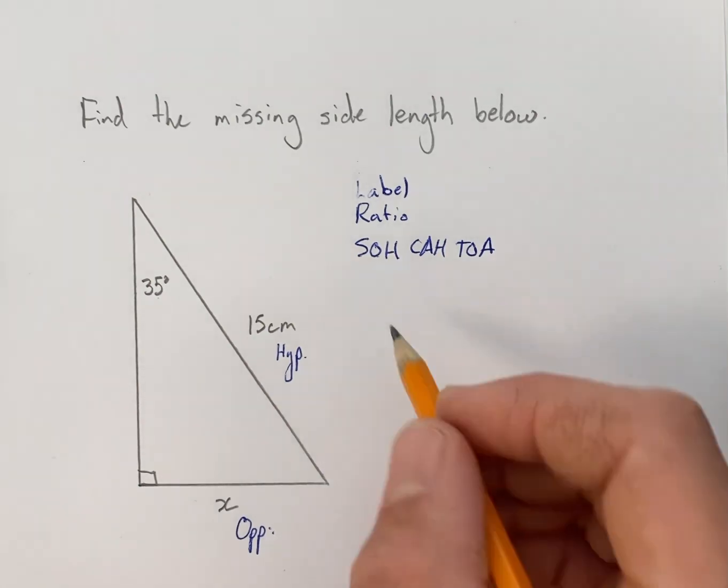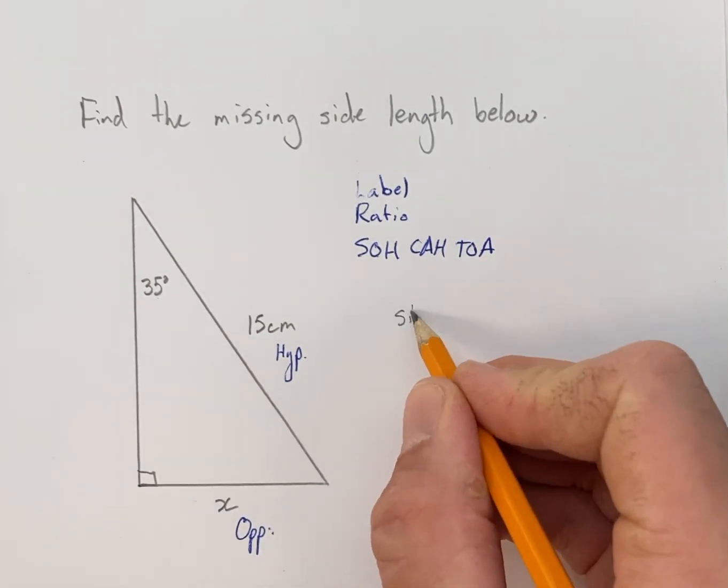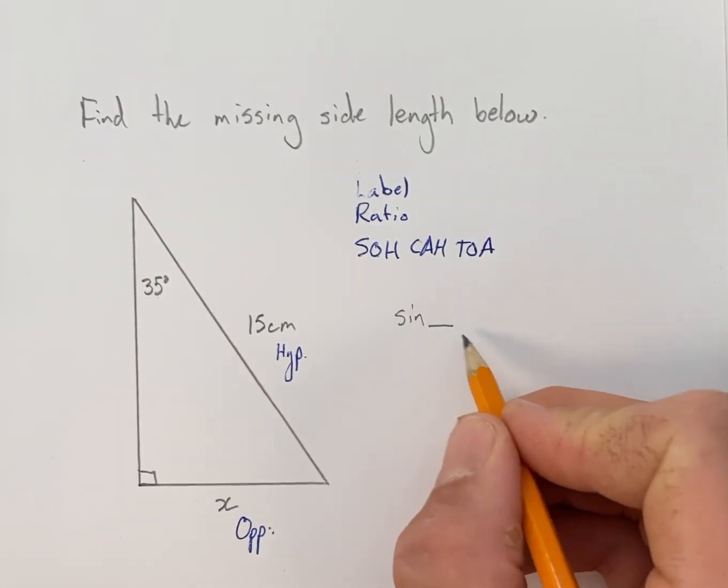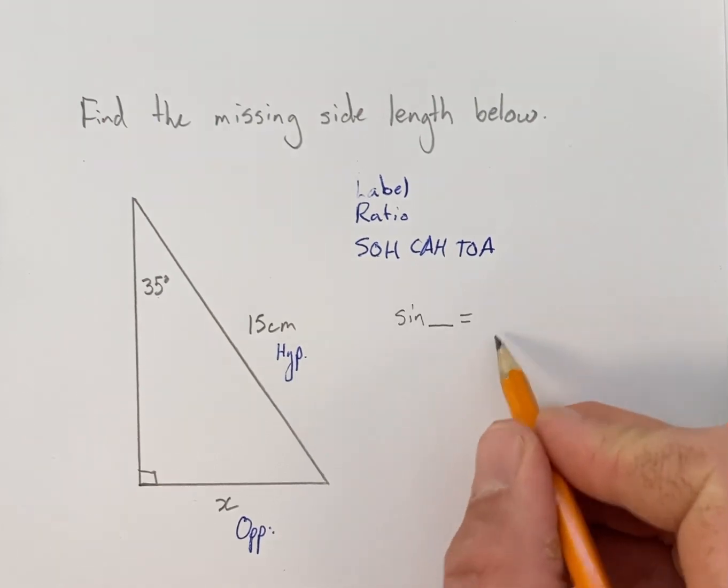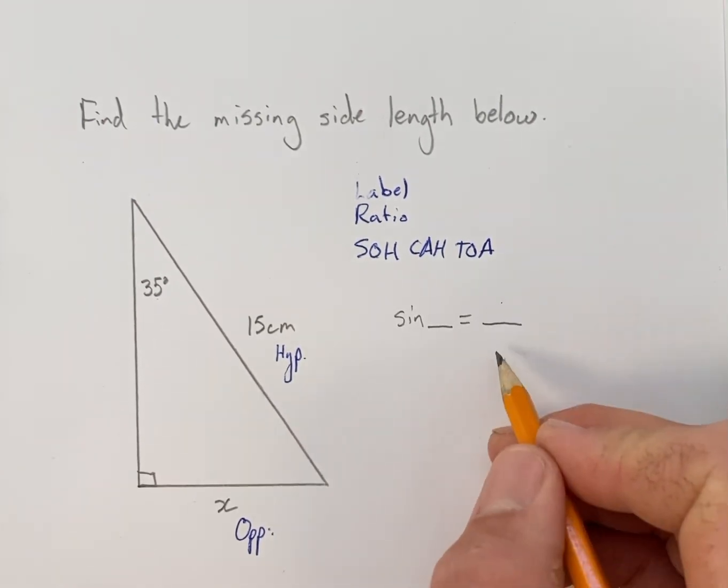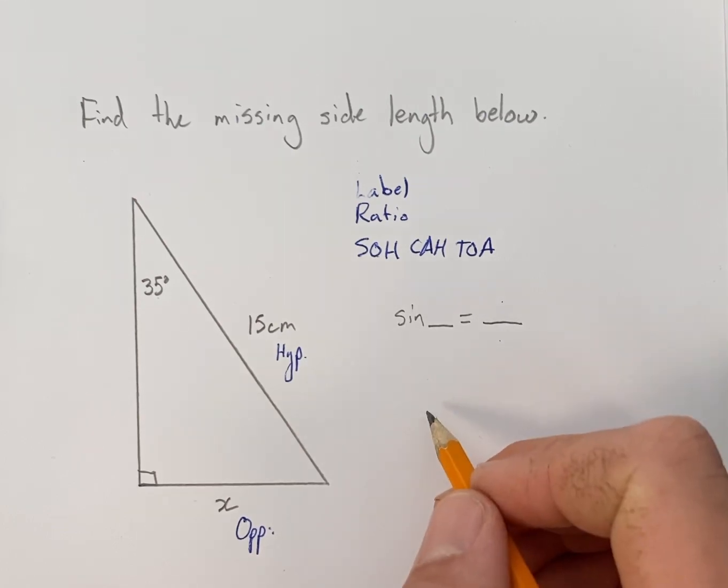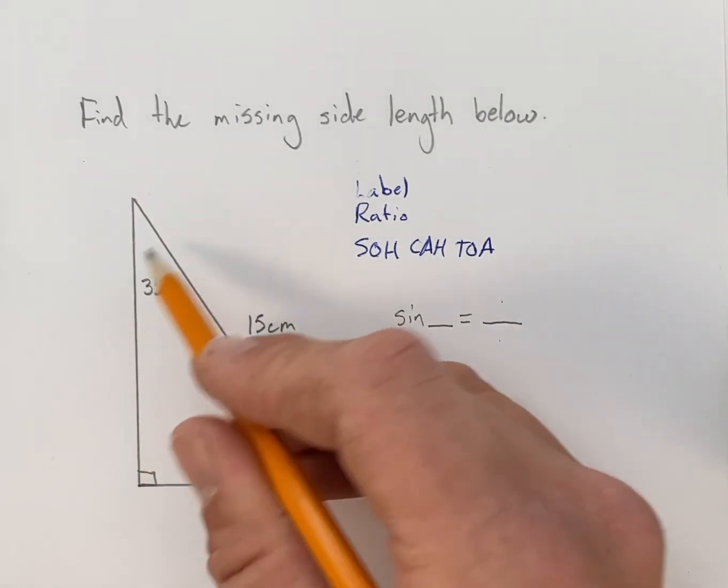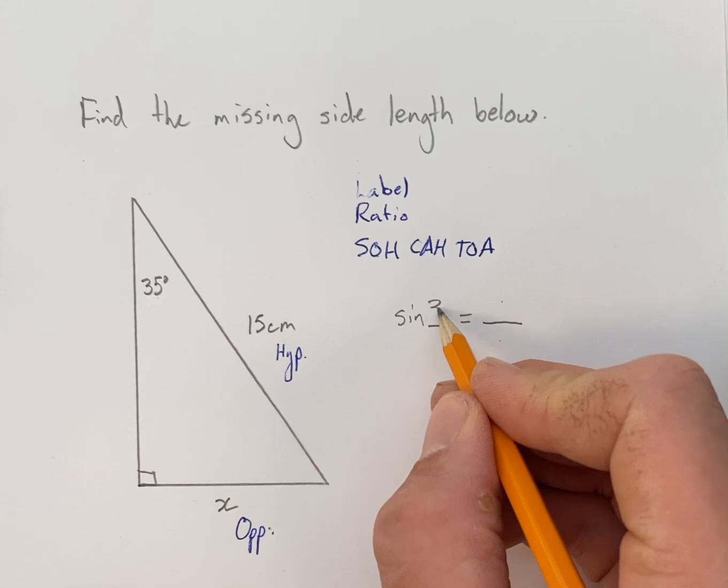So we go ahead and set up our ratio. We'll say sine, and we leave room for an angle, is equal to, and we'll create a fraction. This is going to be the ratio where we have our opposite over our hypotenuse. Now the angle is always your indicated angle, so sine of 35 degrees.